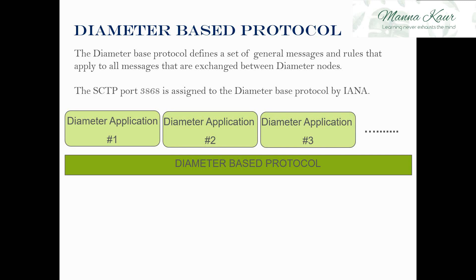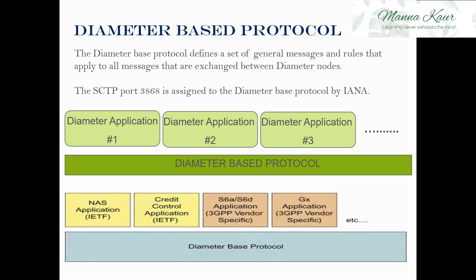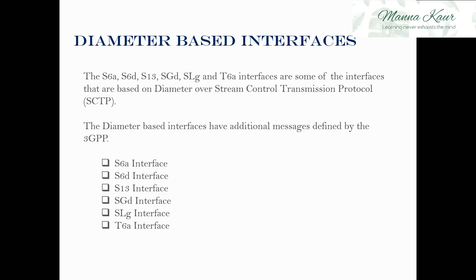Some examples of diameter applications on top of the diameter base protocol are the NAS application (network access server application), credit control for messaging, and gaming. Some examples of diameter based interfaces are S6A, S6D, S13, SGD, SLG, and T6A.